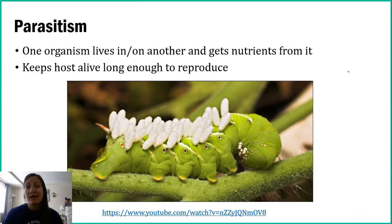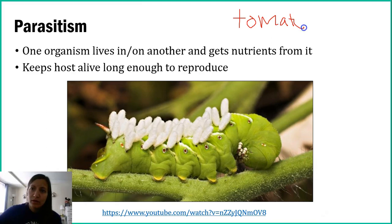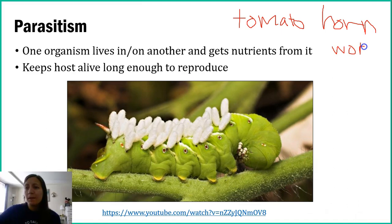Predators essentially kill their prey right away, whereas with parasitism it's a slow, painful death — if there's death at all. The example we have here is a caterpillar of a moth species called the tomato hornworm. Although it's called a hornworm, it is actually a caterpillar that will metamorphose later in its life. All of those white things you see on it are wasp cocoons.